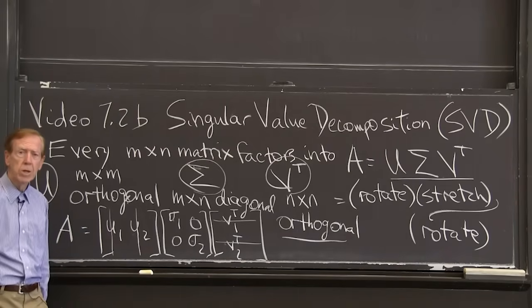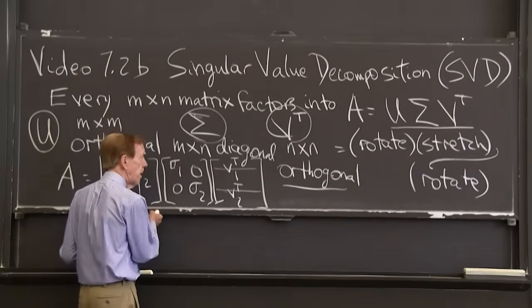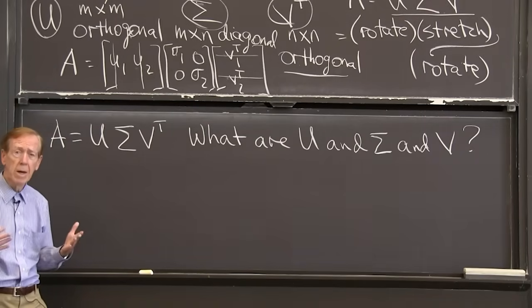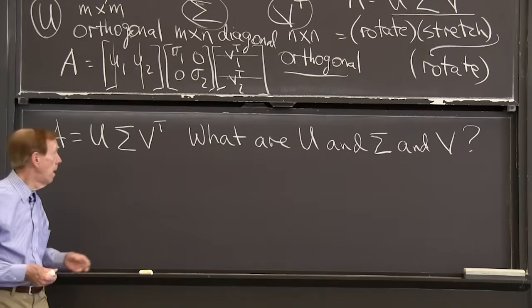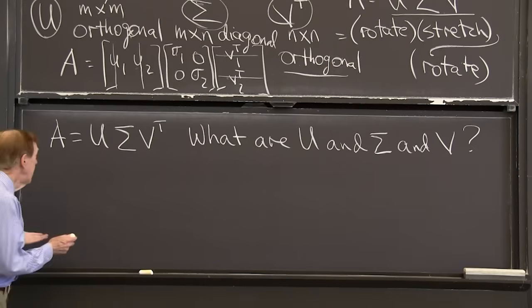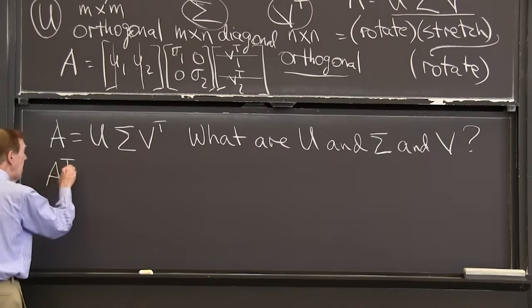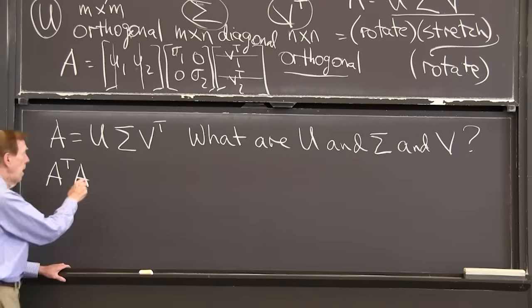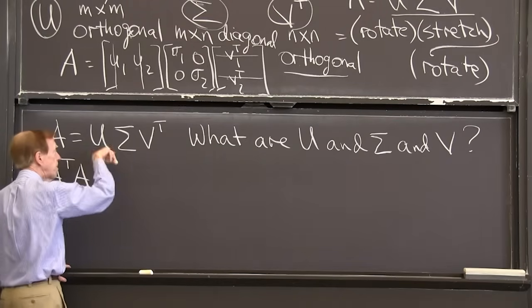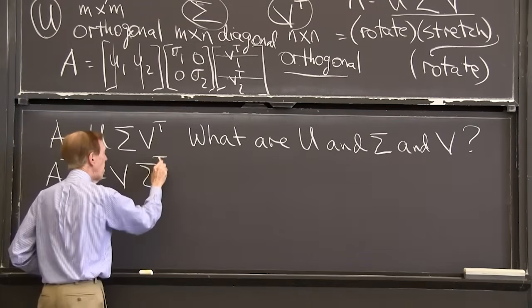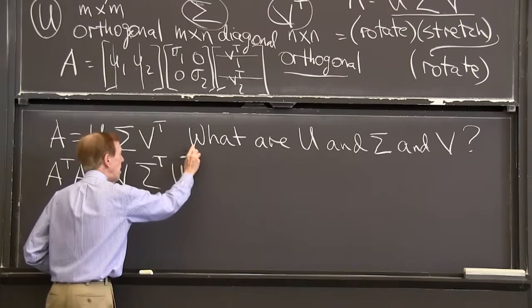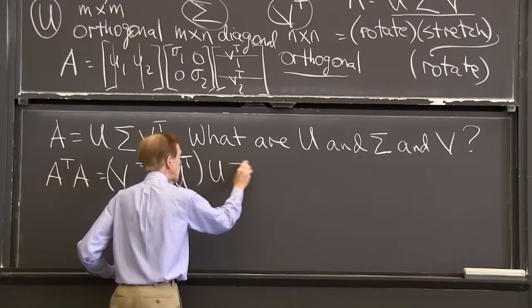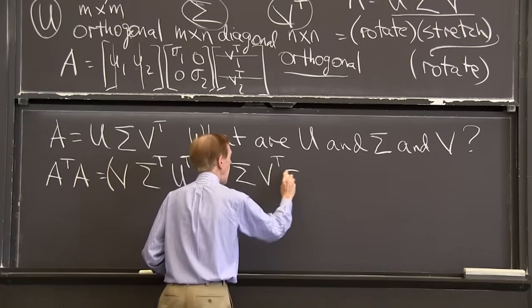That's the statement of the factorization, but we have to think a little bit. What are those factors? Can we see why this works? I'll look at A transpose A. I like A transpose A. So A transpose will be V sigma transpose U transpose. That's A transpose. And I multiply by A, U sigma V transpose.